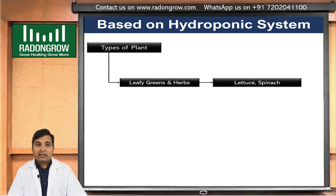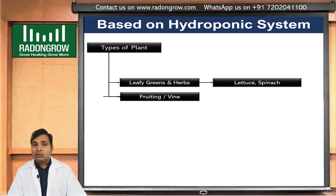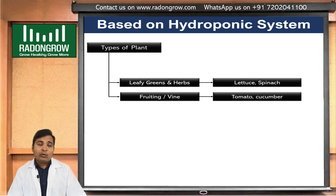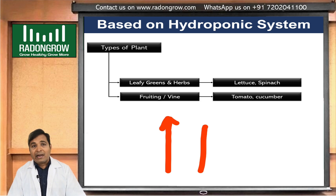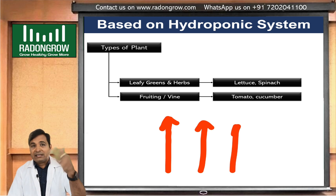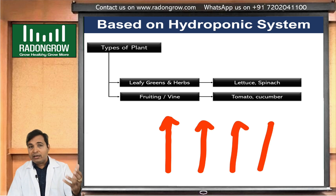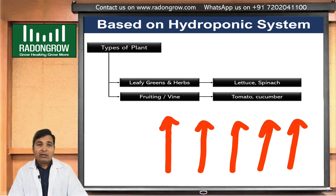If we discuss fruiting crops or vine crops like tomato and cucumber, these kinds of plants grow vertically on their own. Because the plant itself is growing vertically, we cannot use a vertical system for them.